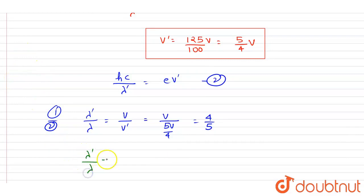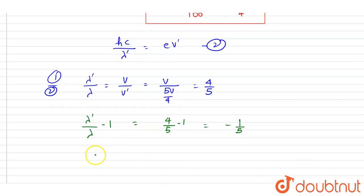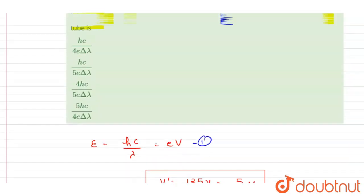So if you see the lambda shift, if you subtract both sides by one, you will write down lambda dash by lambda minus one, it is equals to 4 by 5 minus one, it is minus one by five.